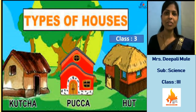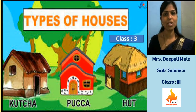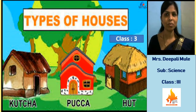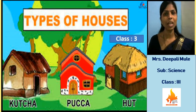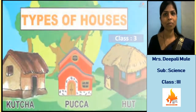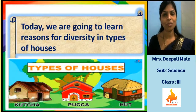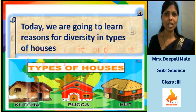We have learned different types of houses like kaccha house, pakka house or temporary house. Again we have learned different types of houses: tree house, stilt house, houseboat, car vans.